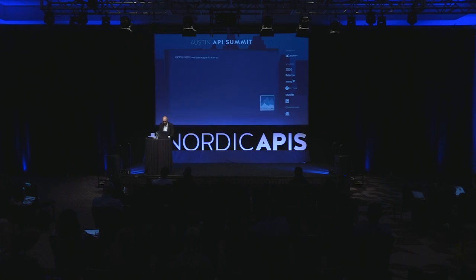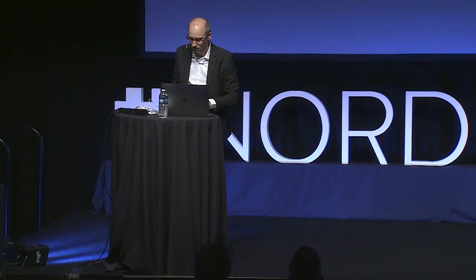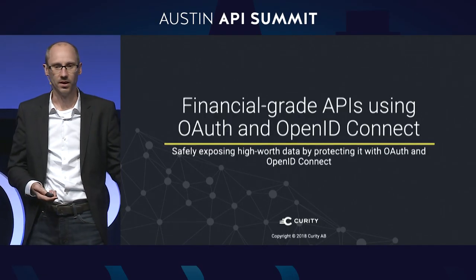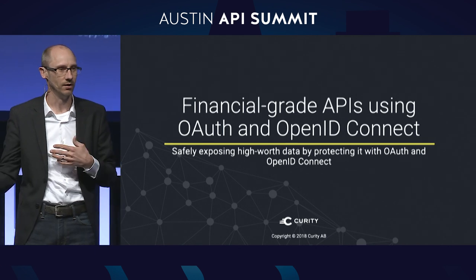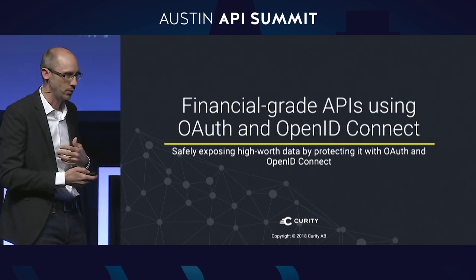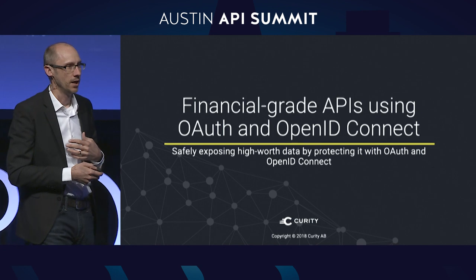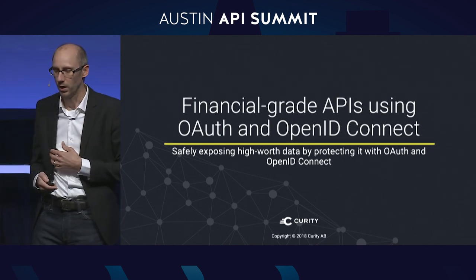I want to talk to you about financial grade APIs. It's important because if you think about where OAuth and OpenID Connect started, it was really about securing comments on blog posts, and now we're talking about enterprises. So it's a whole other class of security. We need to understand what OAuth and OpenID Connect do and what they bring, and how we can go from commenting on blogs to actually protecting financial data, because the way we put all these different standards together for that class of problem is quite different.